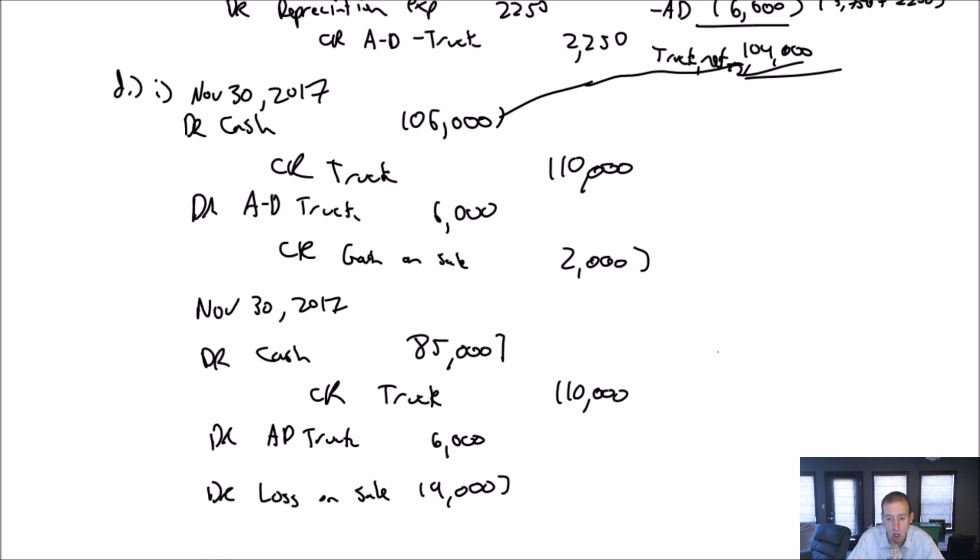I want to compare the two entries. They're almost identical entries. The difference is the cash and the gain or loss. When I get paid more, it's a gain. Why do I credit gains and debit losses? Gains are revenues. When we prepare our financial statements, we're listing all of our revenues and expenses. This would be listed as other revenue. This is an other revenue when I have a gain. It's an other expense when I have a loss on sale.